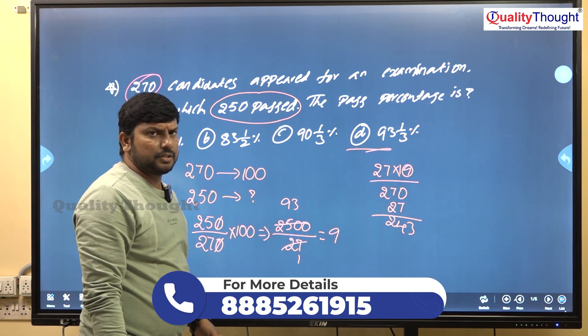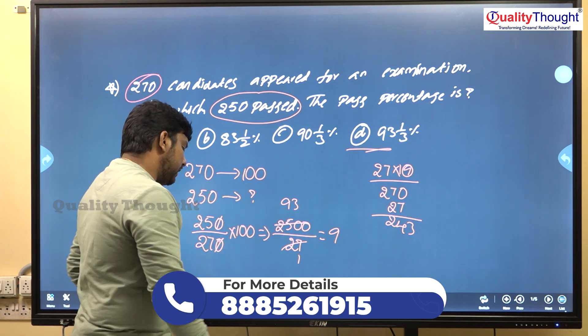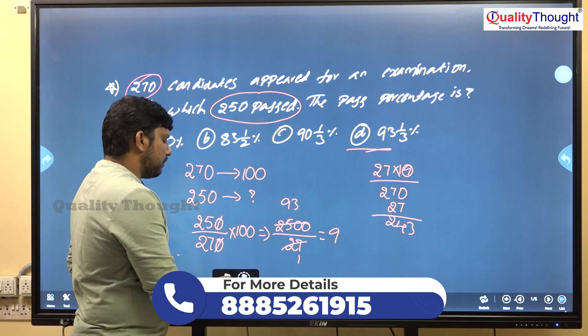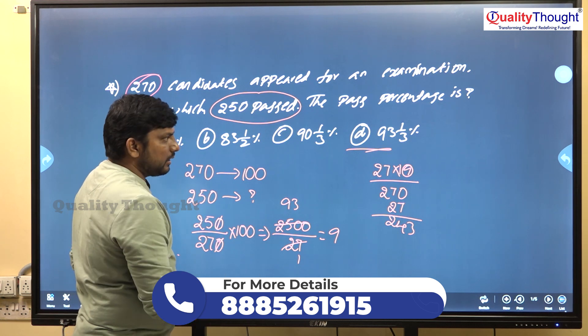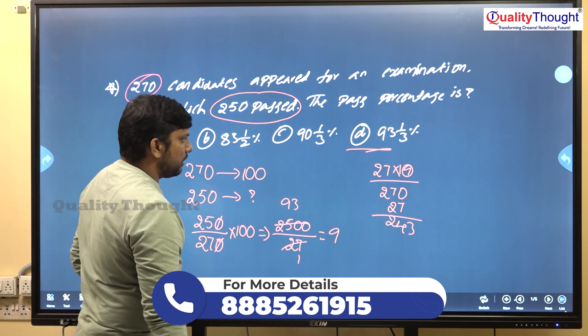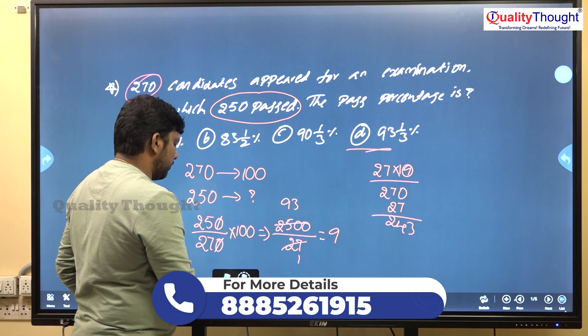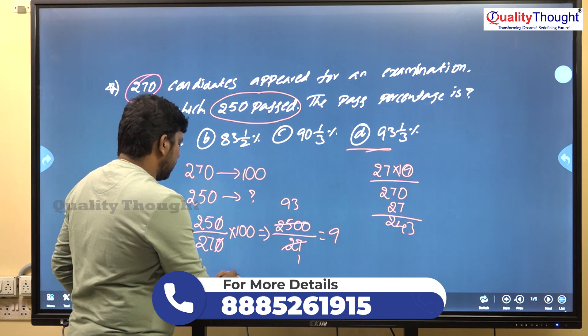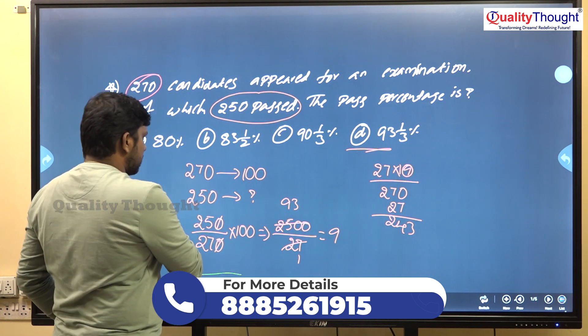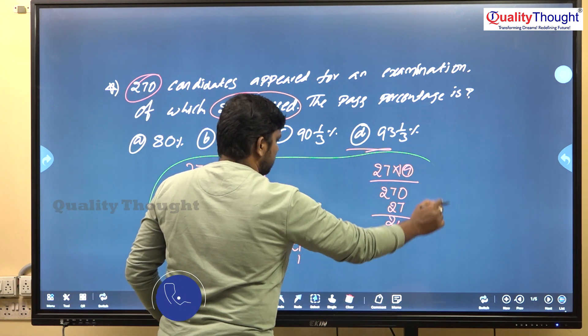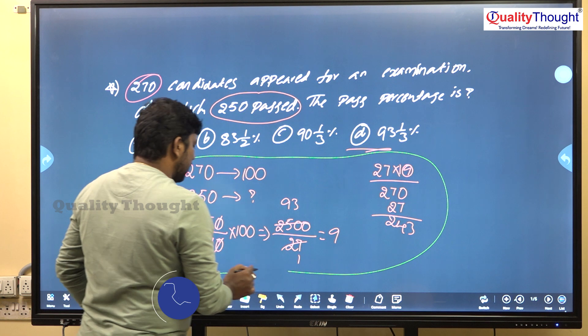Approximately, we can use an assumption method. If you use assumptions, you can close the calculations from 100 to 200 percent accuracy.